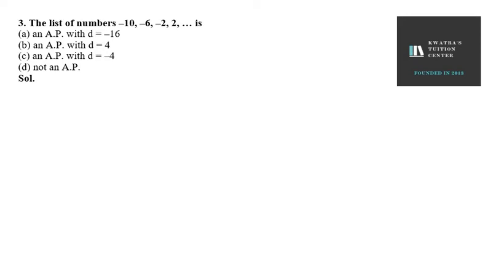Let's start with question number 3 from exercise 5.1. The list of numbers -10, -6, -2, 2, ... is an AP with D = -16, an AP with D = 4, and an AP with D = -4.